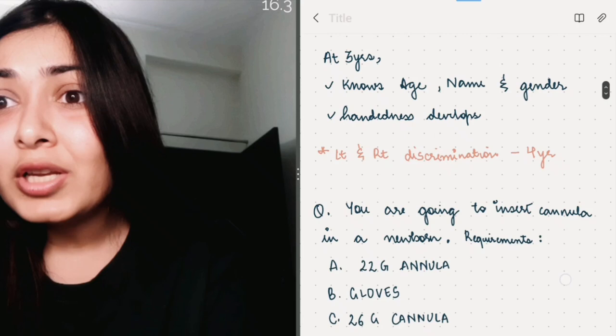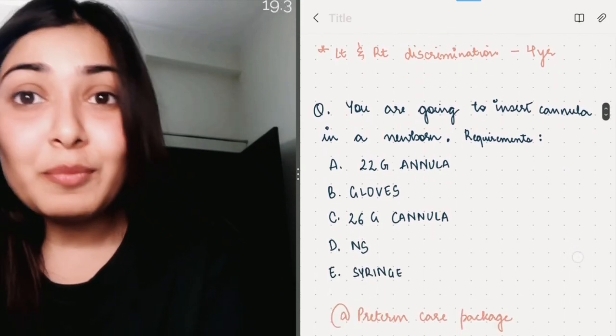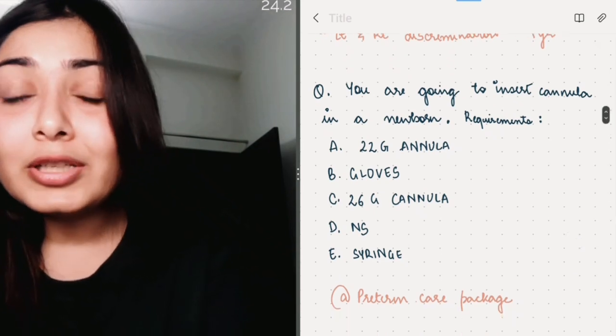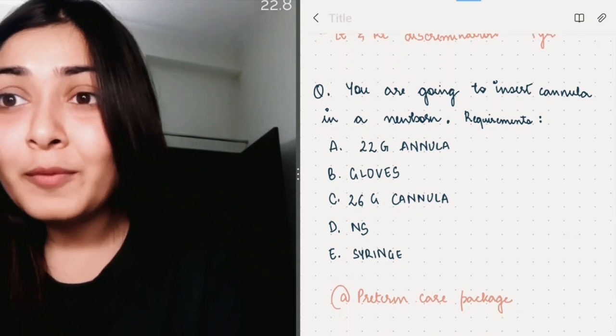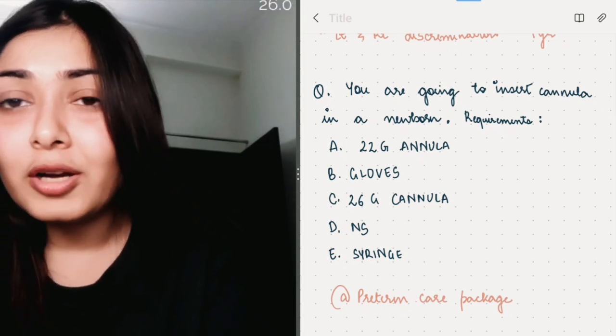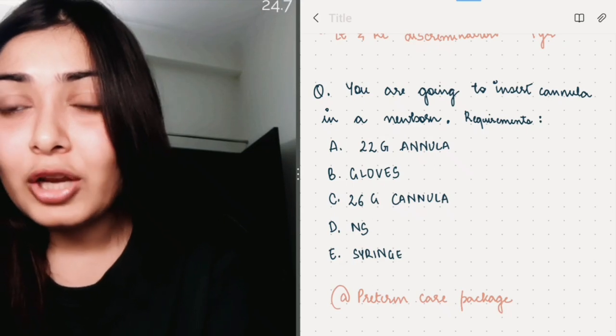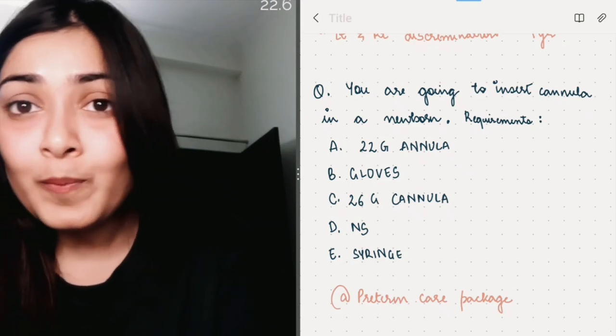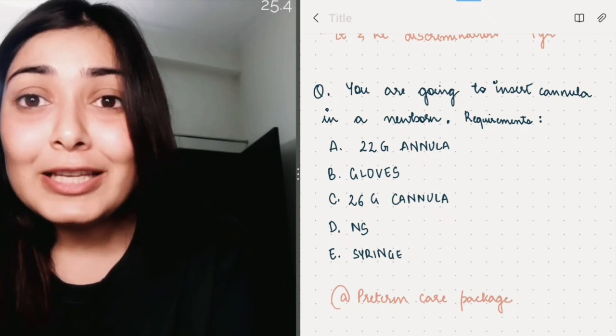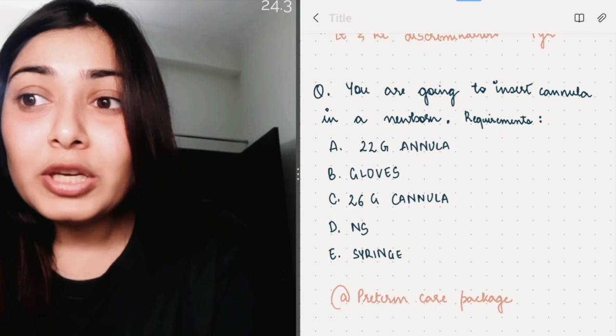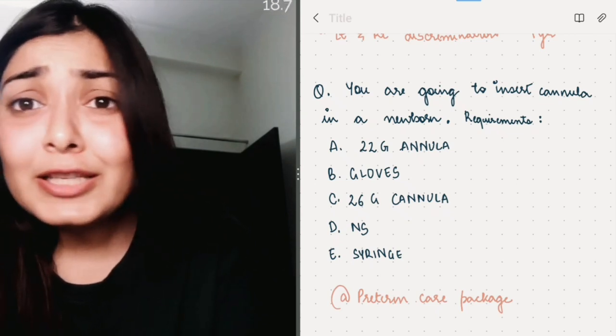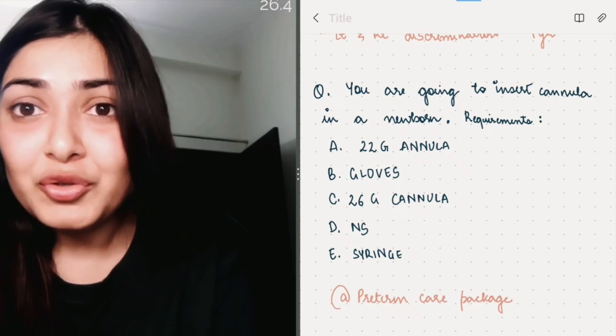Coming down to the next question, it was an image based question, even in fact a video question. You are going to insert a cannula in a newborn and what all things you would require. So the options were like 22 gauge cannula, gloves, 26 gauge cannula, normal saline and syringe. So for this question, I am going to refer to the NEKU YouTube channel that is a preterm care package, preterm baby package. Let's see this video and what all the requirements they have mentioned there.